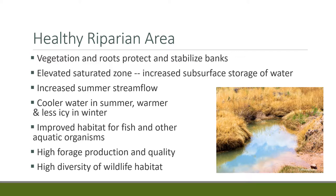A healthy riparian area also has an elevated saturation zone — subsurface water close to the surface — and summer stream flow. When riparian areas go out of condition, they don't have much water in the stream, whereas people repairing their watershed often comment that the river or stream is flowing longer into the summer. Healthy riparian areas have cooler water in summer and warmer water in winter, which reduces ice. They also have improved habitat for fish and aquatic organisms, high quality forage, and high diversity for wildlife.